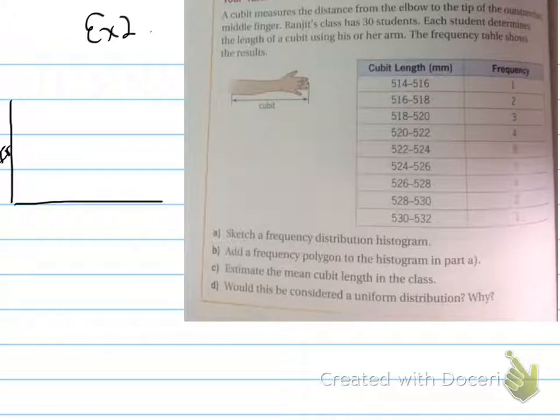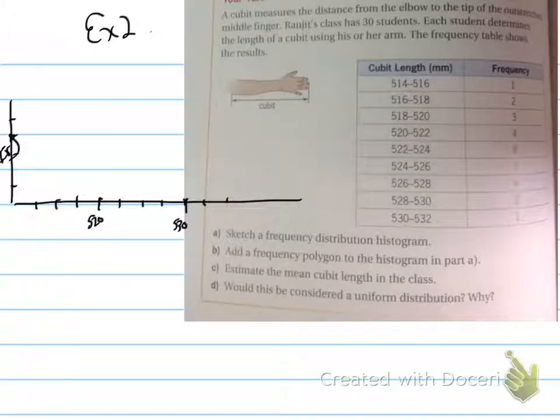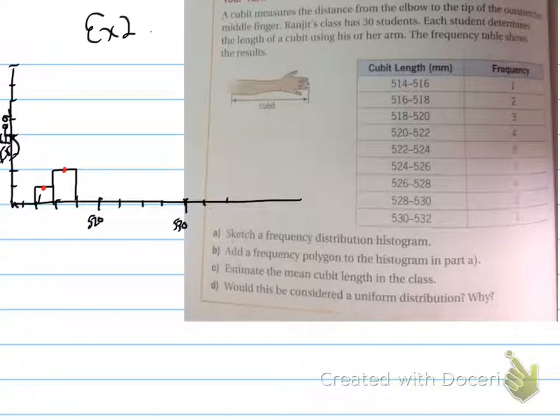Sketch a frequency distribution histogram. So we have frequency along the y-axis, and we have our intervals along the x-axis. And what we will do is do 514 to 516 and so on, and create our frequency distribution histogram. And we end up having all of these values. So we have 1, 2, 3, and so on. You can all draw this. I'm assuming we can draw all of this. So what we've got here is just you can keep drawing them all the way 3, 4, 8, 5, 4, 2, 1, and so on.